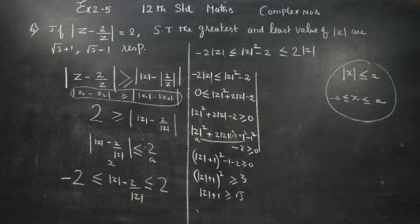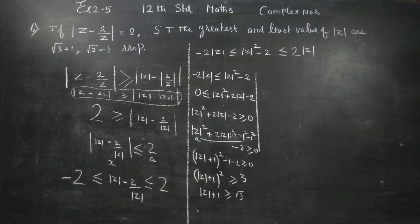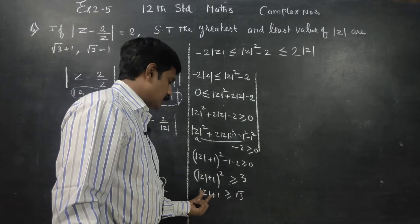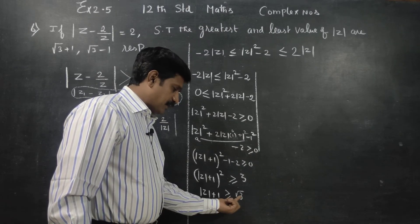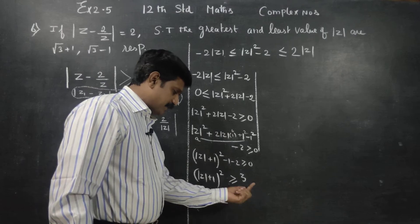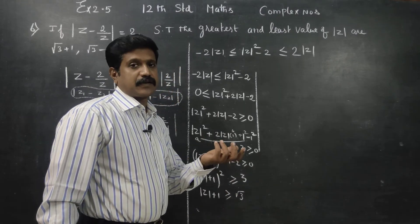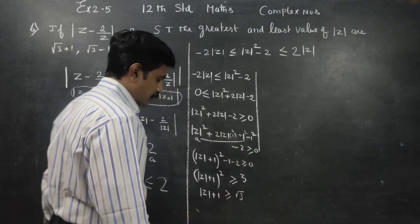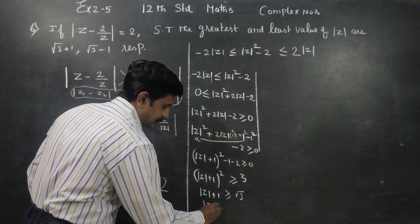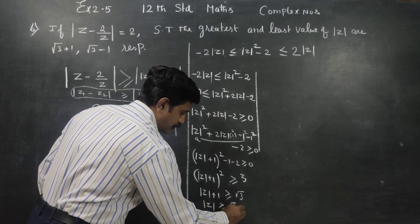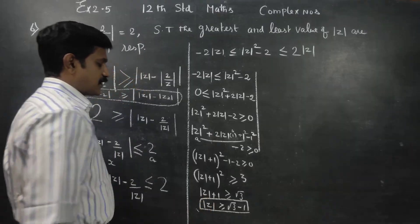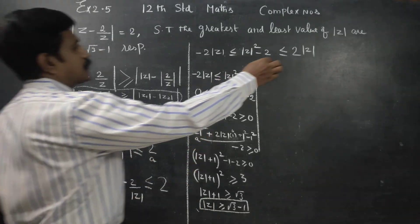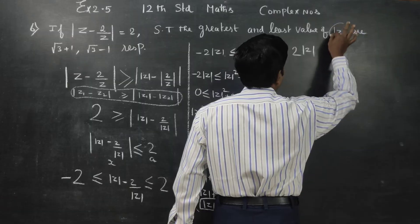Since distance is always positive, the negative range is discarded. Therefore modulus of z is greater than or equal to root 3 minus 1. This is the least value of modulus of z.